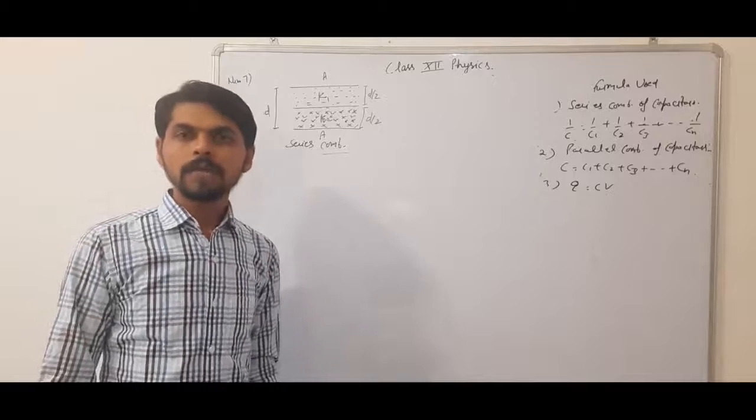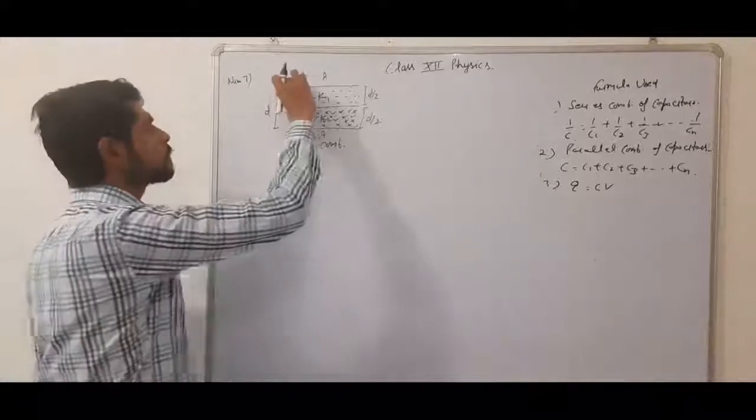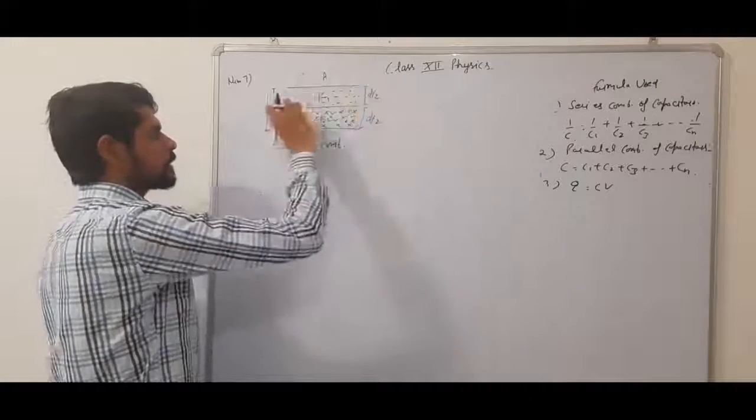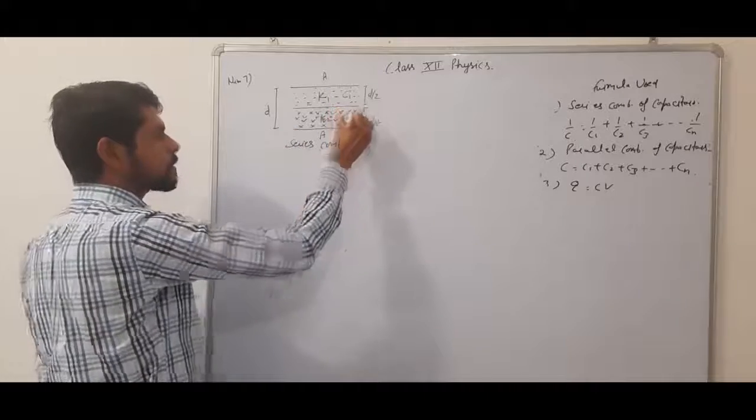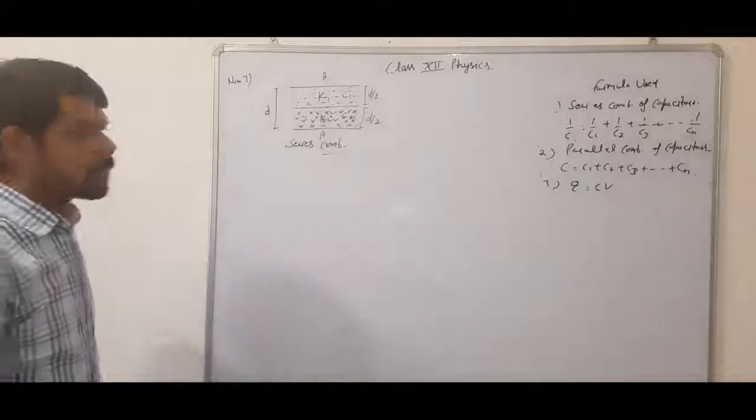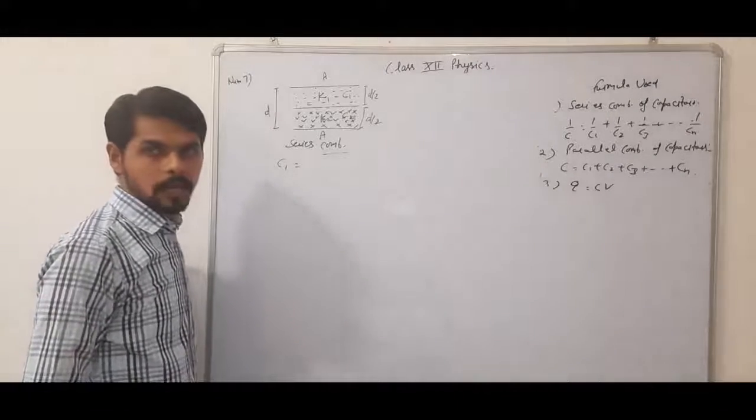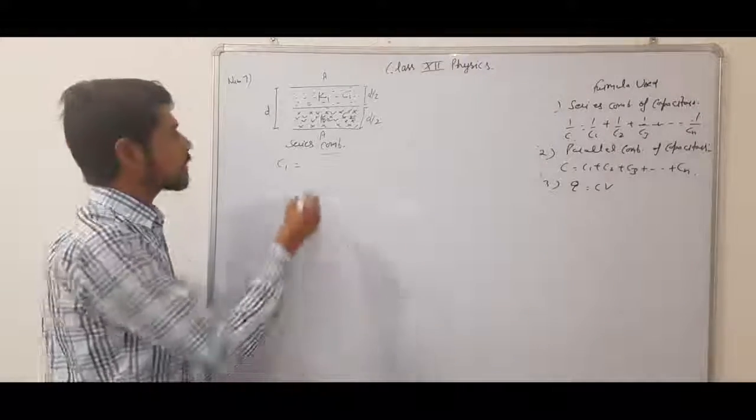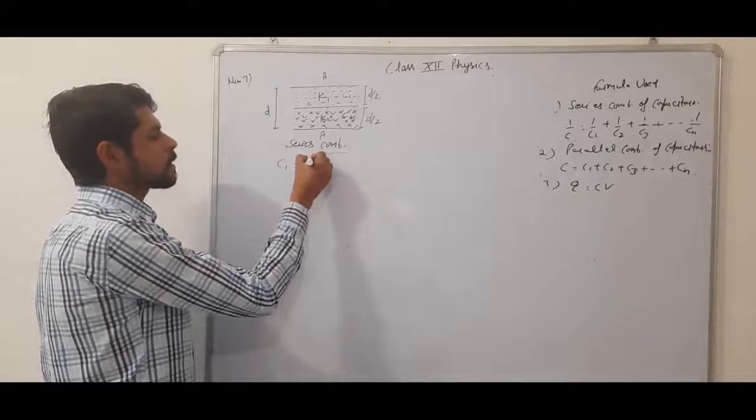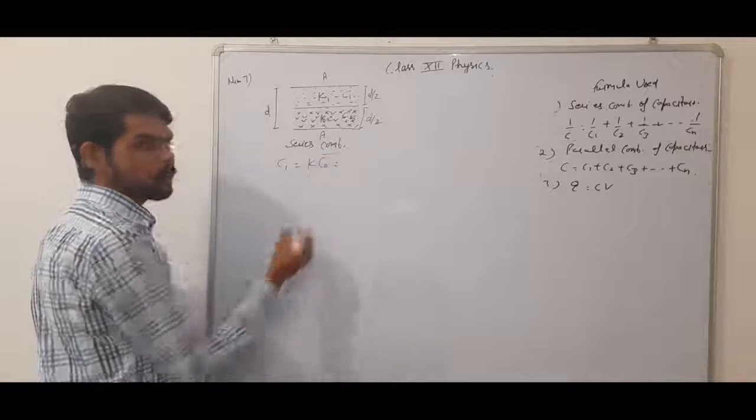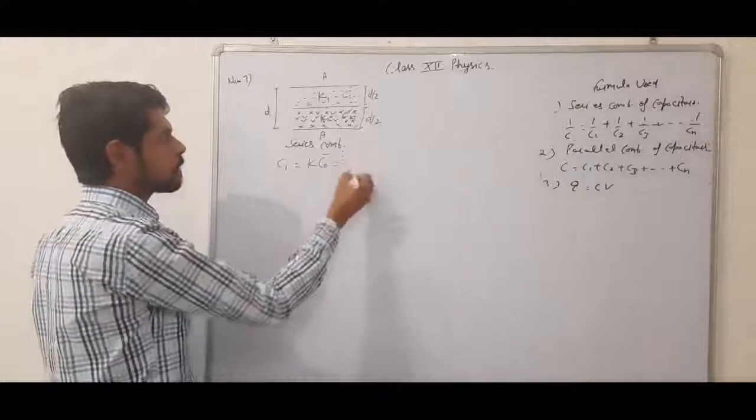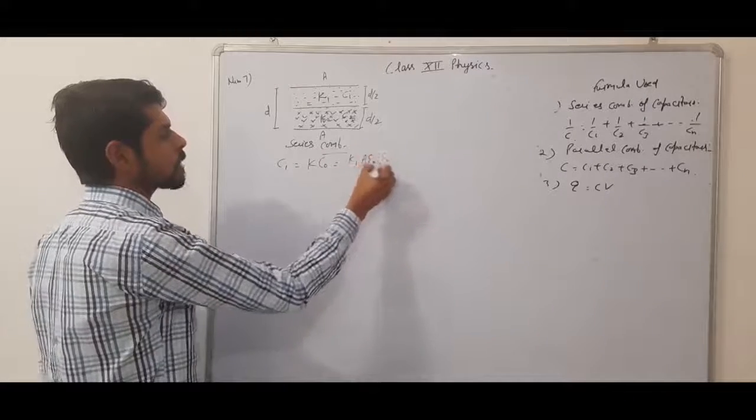It means we have two capacitors now. First is the upper half and second is the lower half. This is capacitor C1, this is capacitor C2. What is the capacitance of capacitor C1? C1 equals K1 times C0, which is K1 times A epsilon naught divided by D by 2, so it will be 2 K1 A epsilon naught by D.